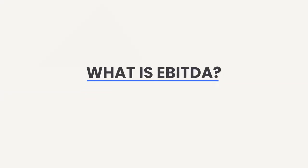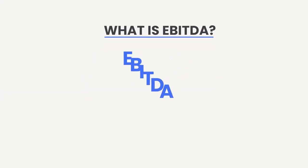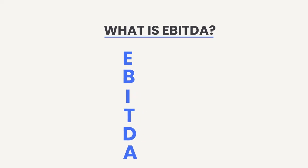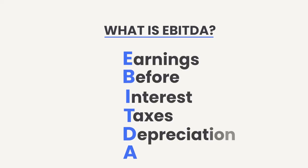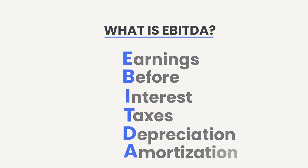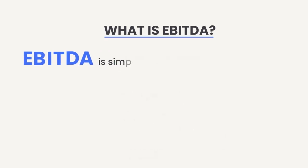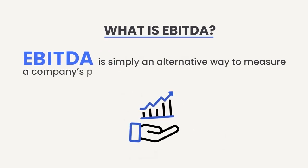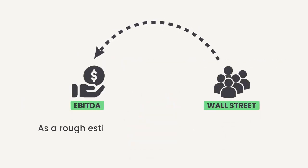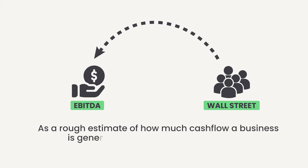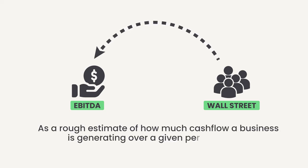So what is EBITDA? EBITDA is simply an acronym that stands for Earnings Before Interest, Taxes, Depreciation, and Amortization. EBITDA is an alternative way to measure a company's profits. Many people use EBITDA as a rough estimate of how much cash flow a business is generating over a given period of time.